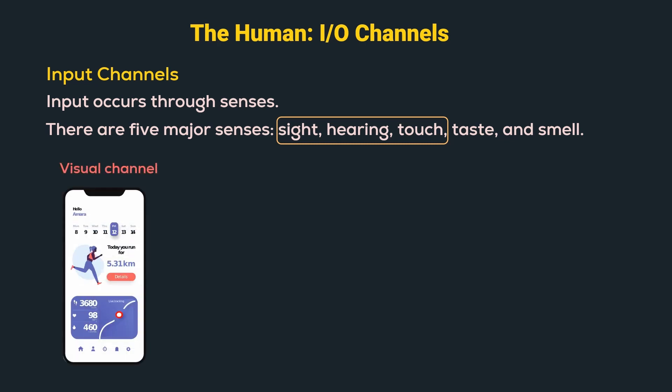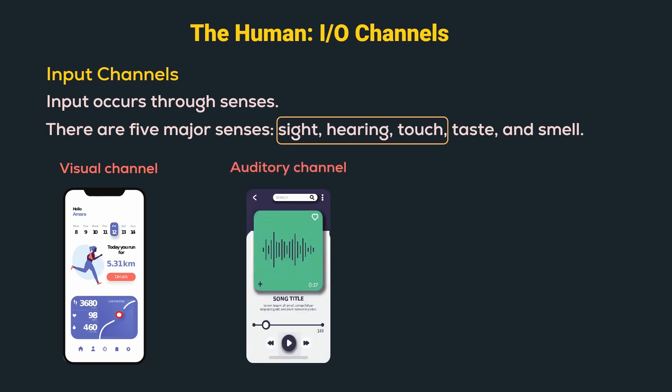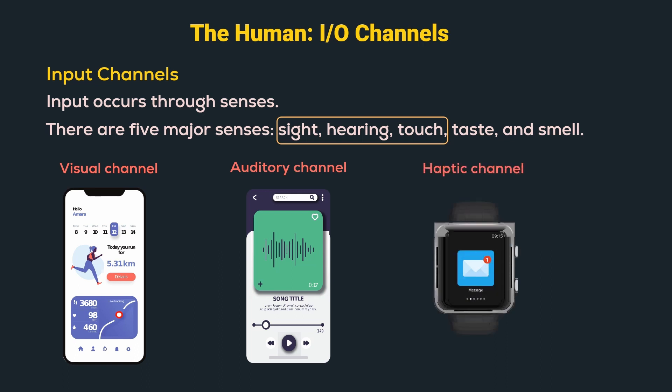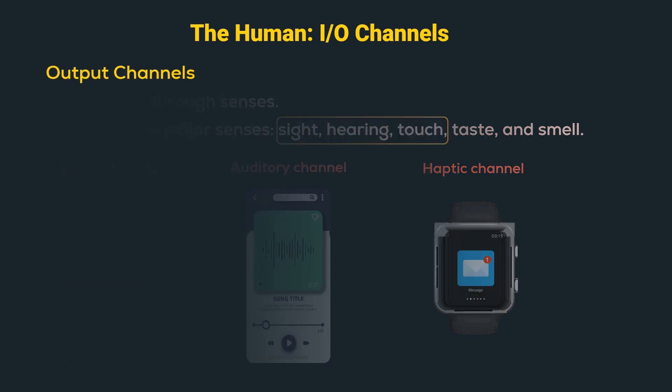Visual channel or sight: Sight helps us to perceive the environment — in this case, the content displayed on the mobile screen. Next is the hearing or auditory channel. For example, a mobile phone ring, message notification, alarm sound, or listening to music. Next is the touch or haptic channel, which allows us to perceive the environment using sensations like vibrations from our mobile phone or smartwatch.